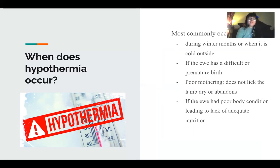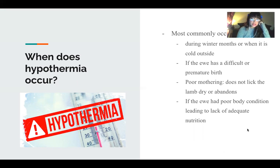Why does hypothermia occur? Most commonly it occurs during the winter months when it's cold and environmental temperatures are decreased. It occurs if there's a difficult or premature birth. It can also occur due to poor mothering — if the ewe does not lick the lamb dry or abandons it. And if the ewe has a poor body condition score, it also leads to a lack of adequate nutrition.